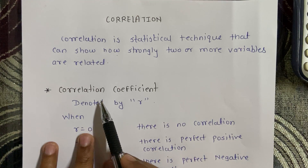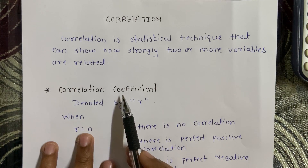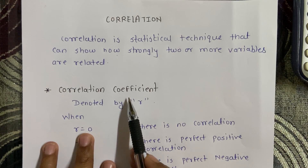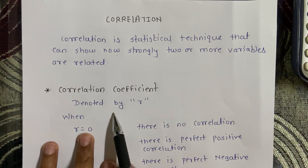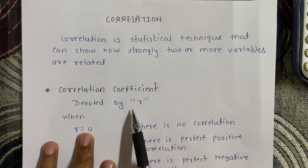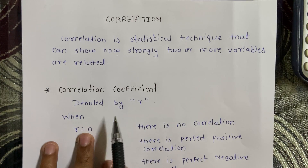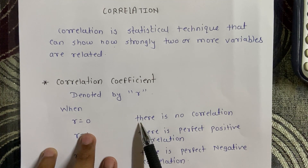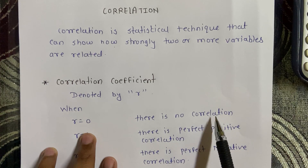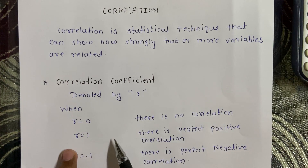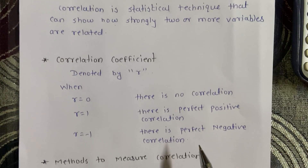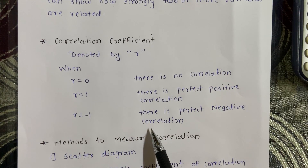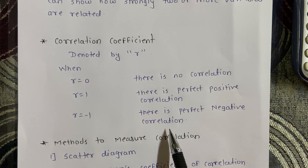There is another concept called the correlation coefficient. Correlation coefficients are used in statistics to measure how strong a relationship is between two variables. It is generally denoted by r. Correlation coefficient values range between minus 1 to 1. When r equals 0, there is no correlation between the variables. When r equals 1, there is perfect positive correlation. When r equals minus 1, there is perfect negative correlation.